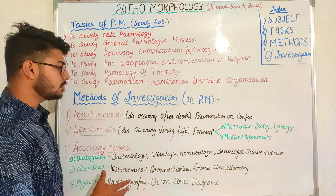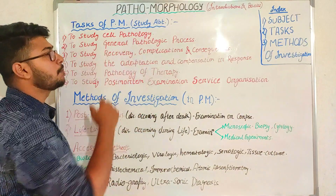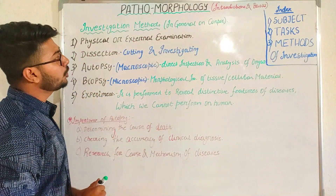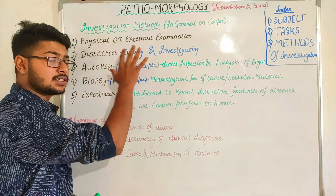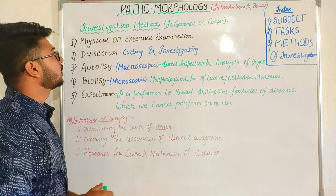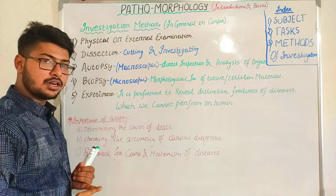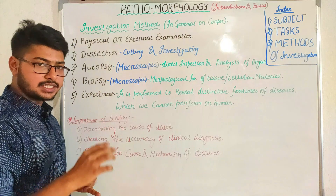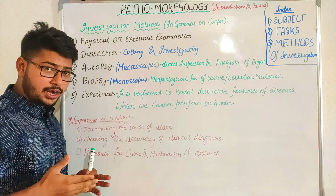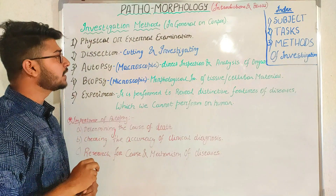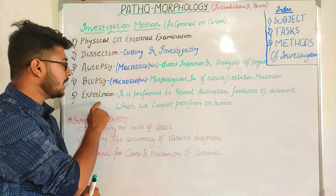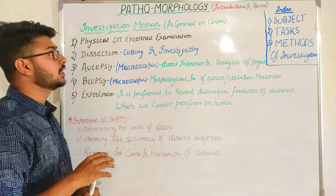Next, we read about investigation methods applied on a general corpse or dead body. First, there is physical or external examination of the dead body. Then we dissect the dead body to see the cause of death. After that, autopsy, biopsy, and experiments are done on that corpse.